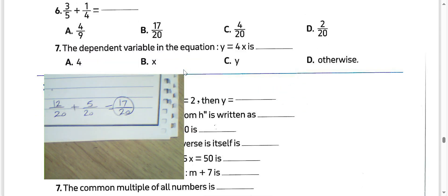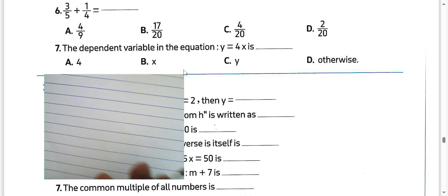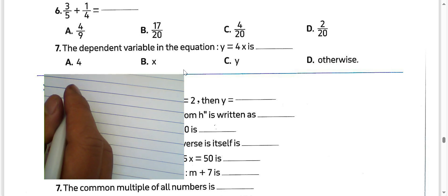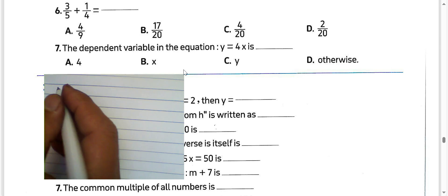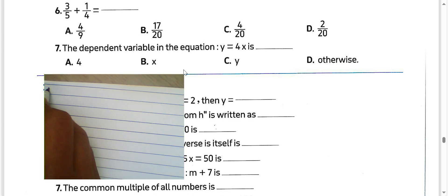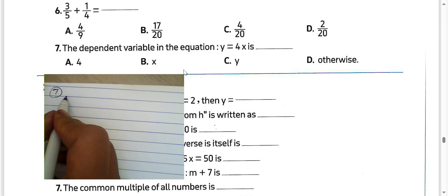The dependent variable in an equation — we must choose Y. Y we call it dependent, and X independent. Question number 7: Y here we call it dependent.